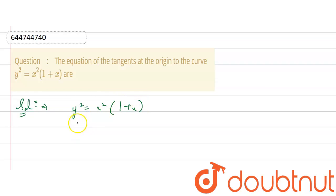Now what we have to do is, we can write this as y square equals to x square plus x cube. As we multiply this x square inside the bracket, then we get x square plus x cube.